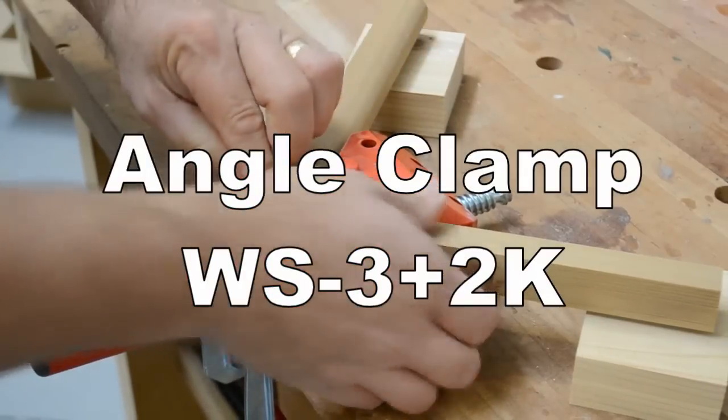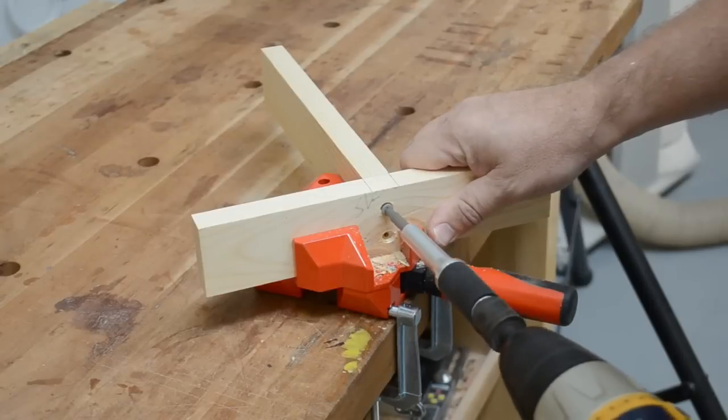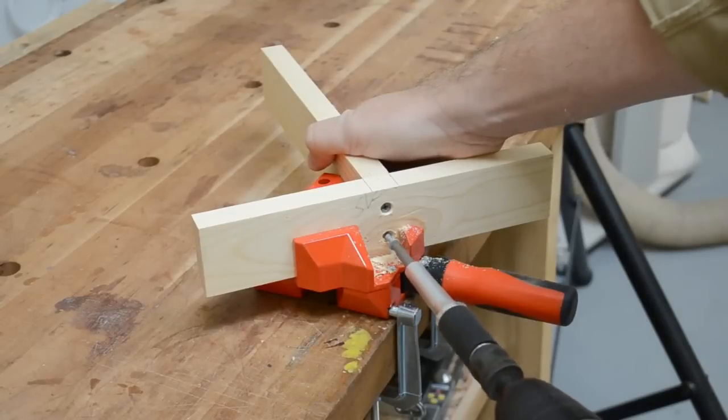Angle clamps are the perfect solution when you need to hold two pieces perpendicular to each other during assembly. Bessie's WS3 offers market-leading capacity and flexibility in this category.